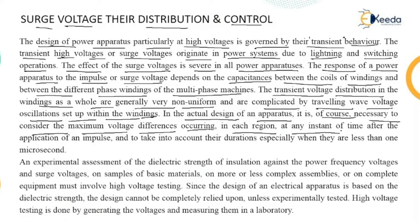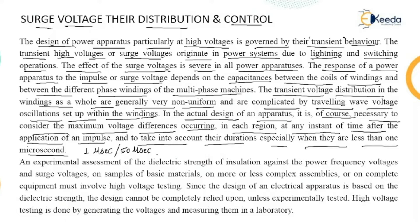In the actual design of apparatus, it is necessary to consider the maximum voltage differences occurring in each region at any instant of time after the application of an impulse, and to take into account their durations, especially when they are less than one microsecond. A surge voltage is represented by a waveform with a rise time and tail time — such as 1 microsecond to 50 microseconds, or 1.2 microseconds to 50 microseconds. The rise time is when the surge rises to its peak value, and 50 microseconds indicates the time for the voltage to reduce from its peak to 50 percent of that value.